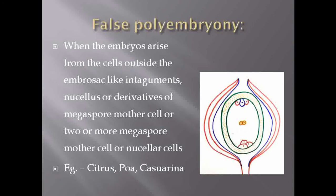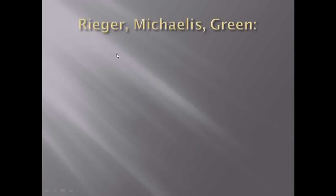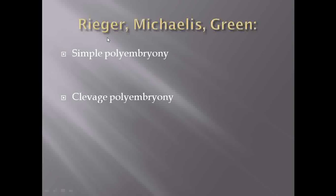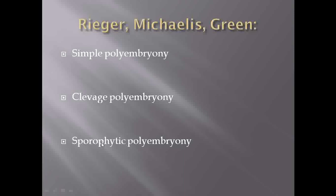We have completed the classification of polyembryony according to Leavenhook, Ernst, and Schnarf. Now studying the classification according to Rigor, Michelius, and Green. These scientists categorized polyembryony into three types: simple polyembryony, cleavage polyembryony, and sporophytic embryony.